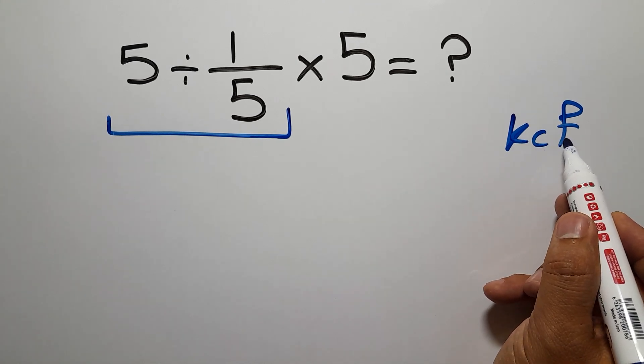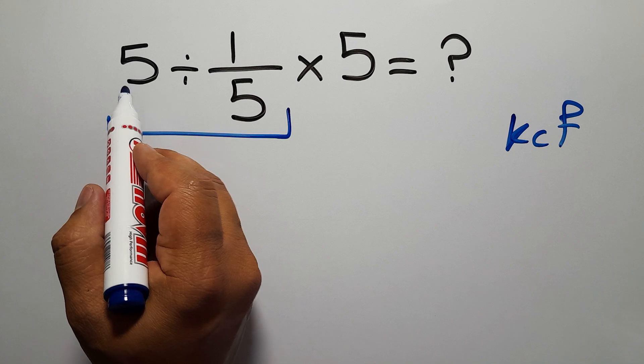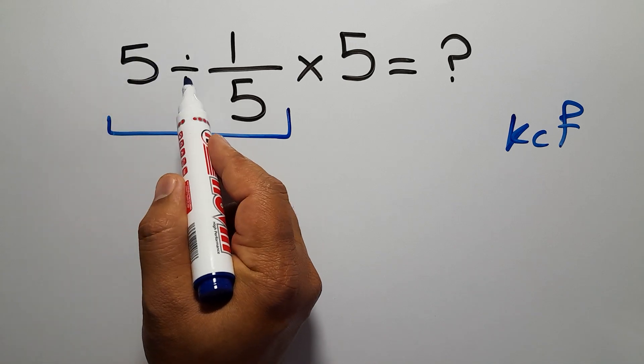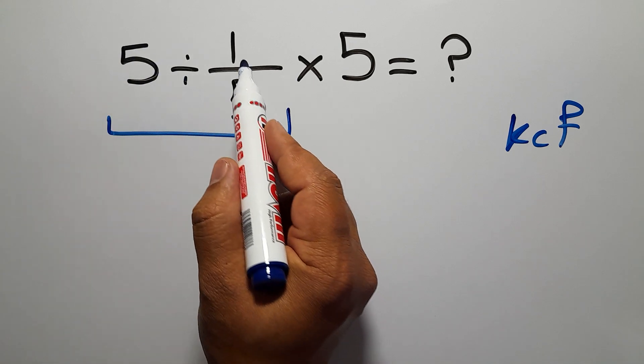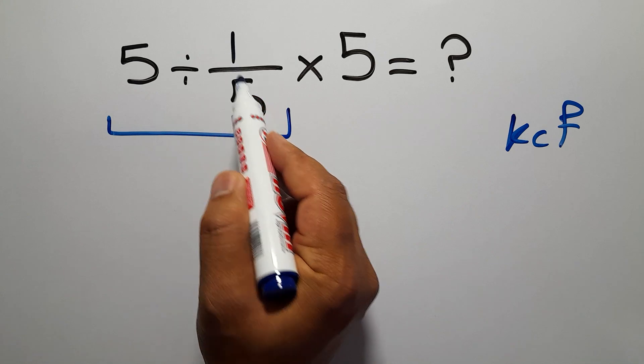and F stands for flip. Keep the first fraction, change division to multiplication, and flip the second fraction.